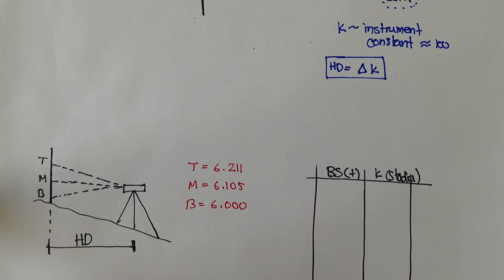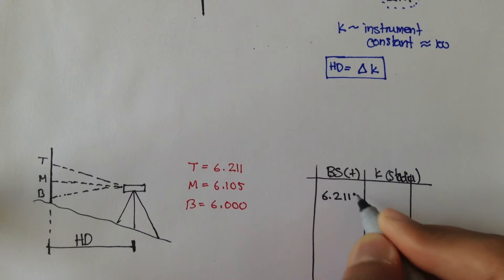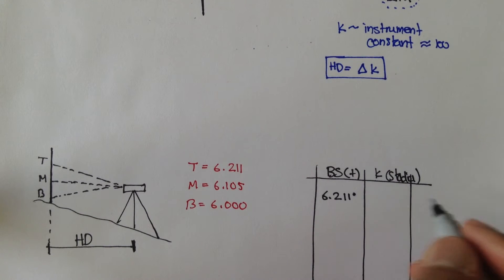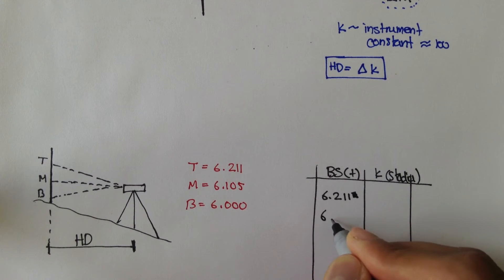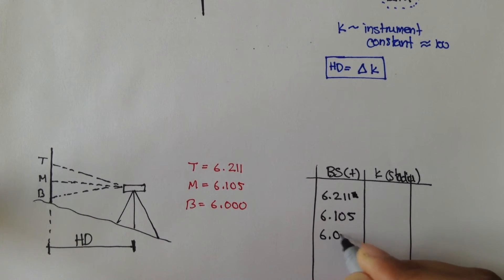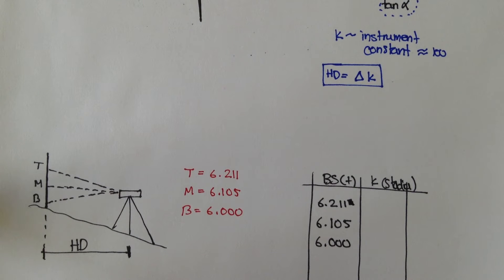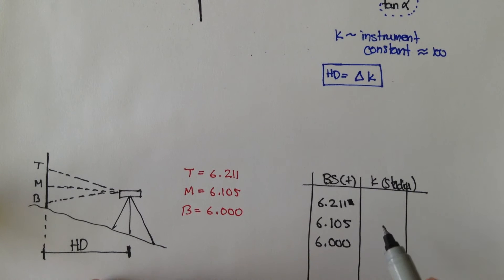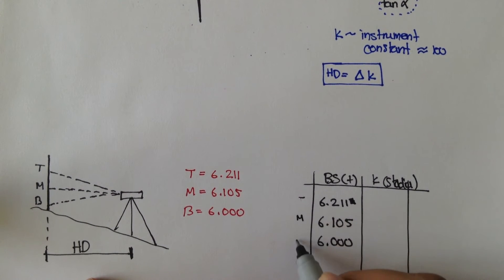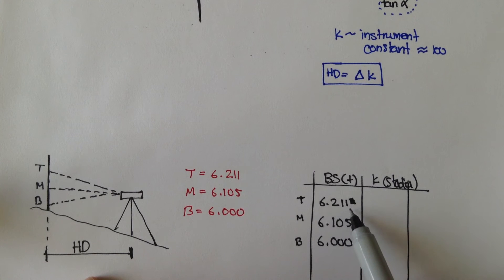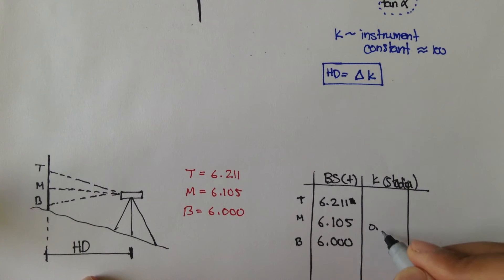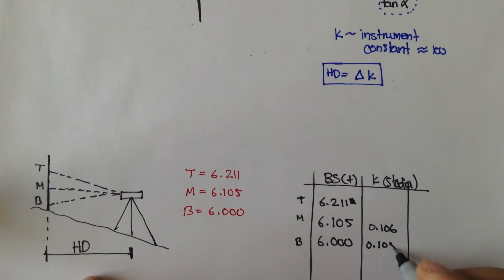The readings we get are: top 6.211, middle 6.105, and bottom 6.000. Remember, your half stadias are your top minus middle and your middle minus bottom. So top minus middle: 6.211 minus 6.105 gives us 0.106. And middle minus bottom gives us 0.105.